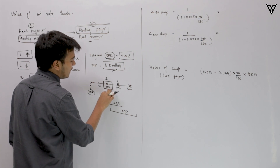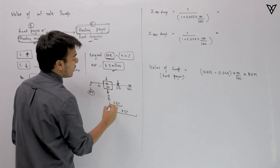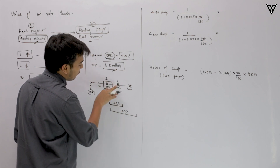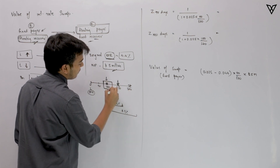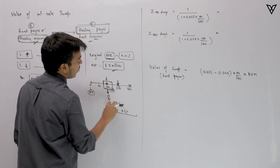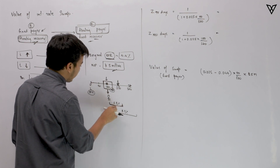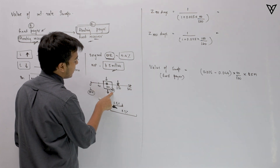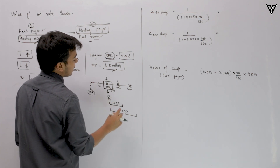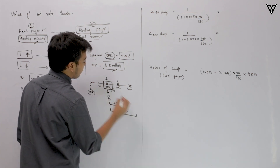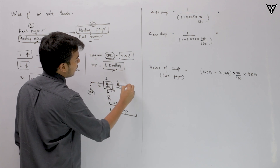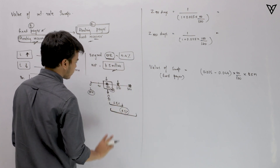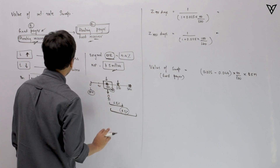Standing on the 180th day, we have two new LIBORs. For 90 days starting from here — that is from day 180 to day 270 — we have a LIBOR of 3.5% (annualized). For 180 days from this point — up to day 368 — the LIBOR rate is also 3.5%. Those are the two LIBORs we have.